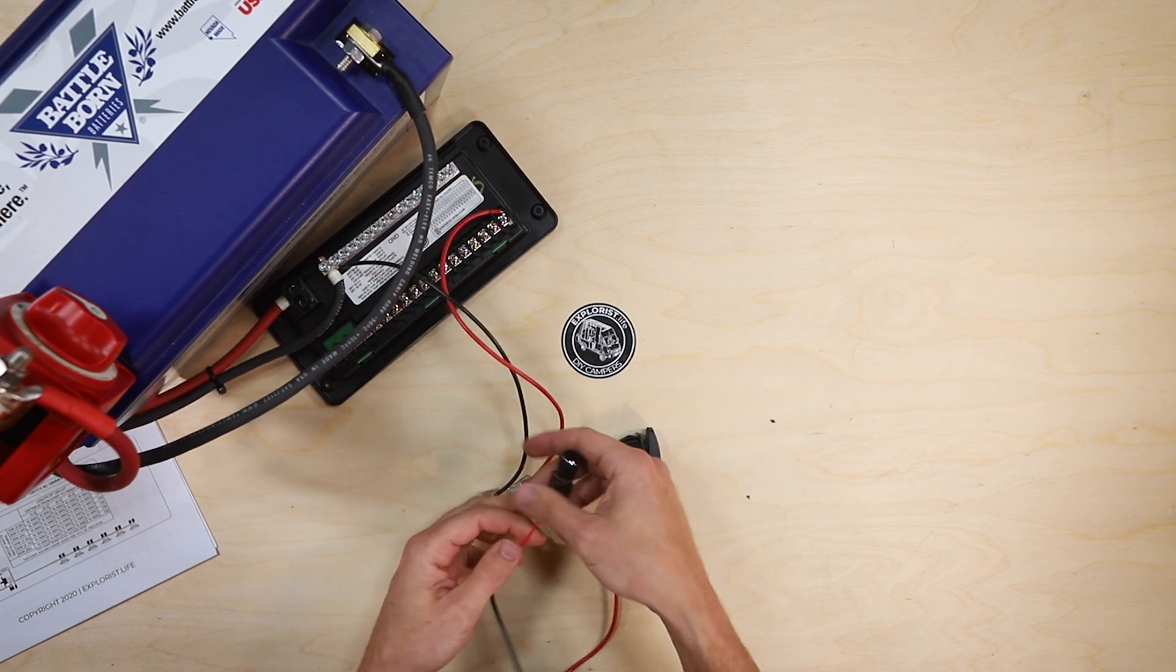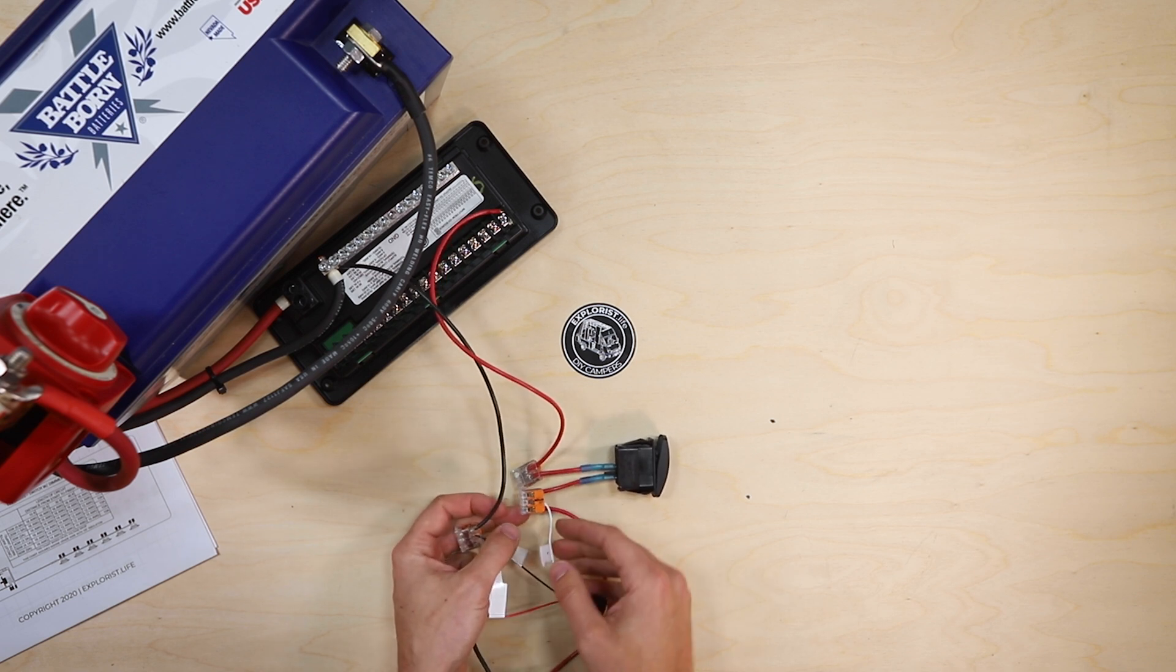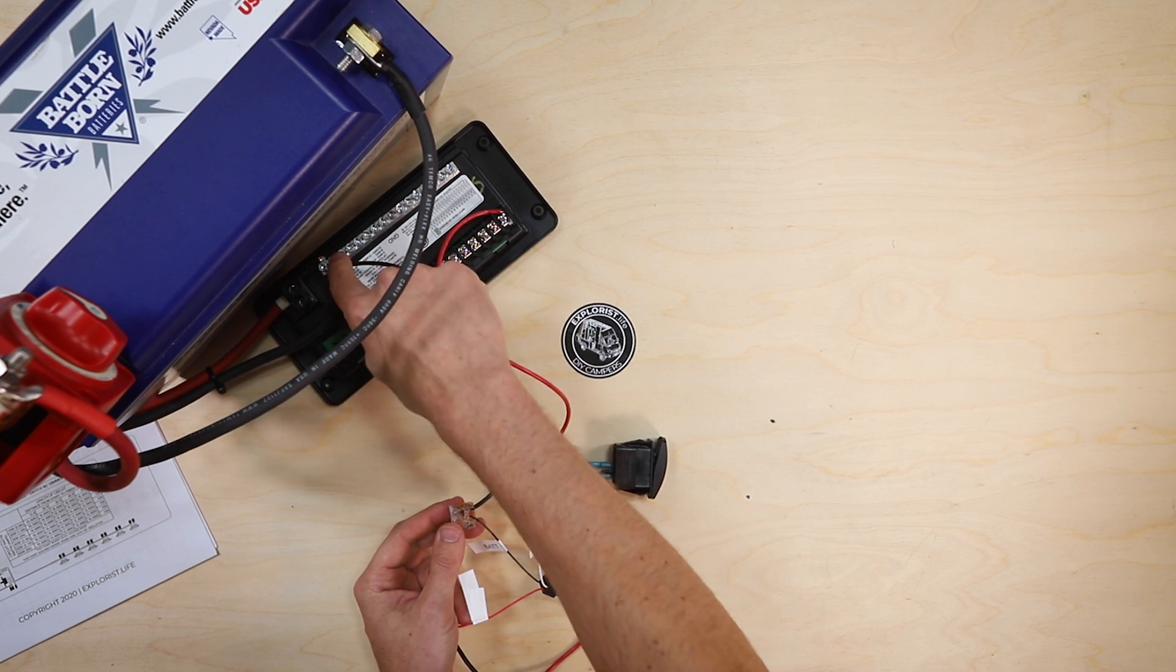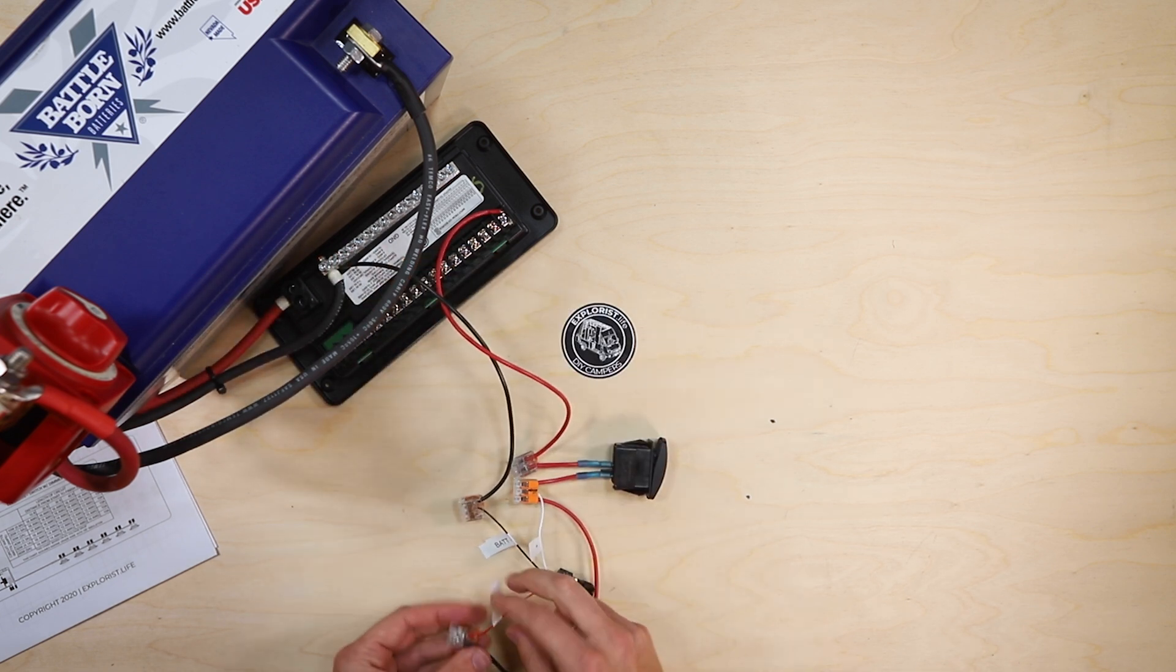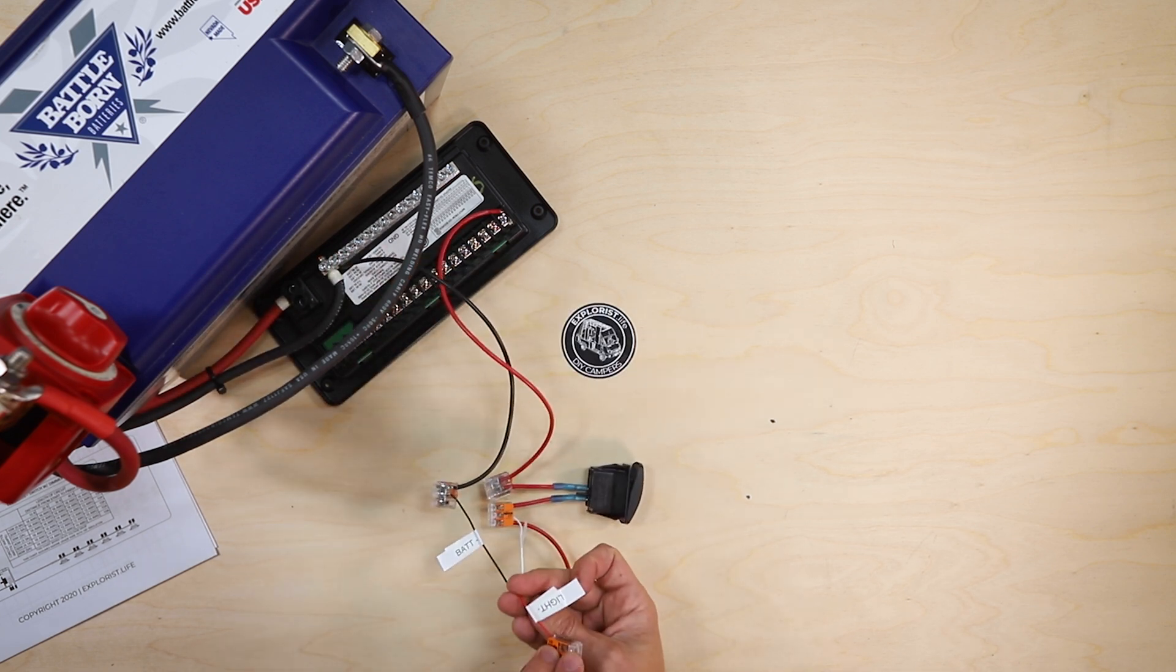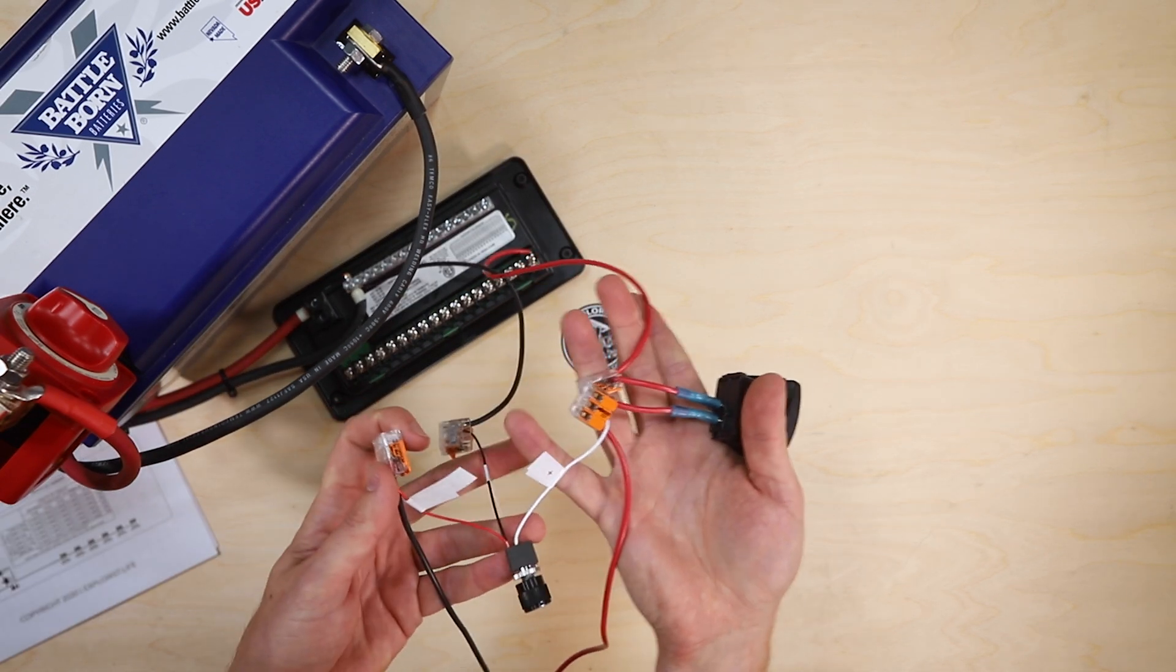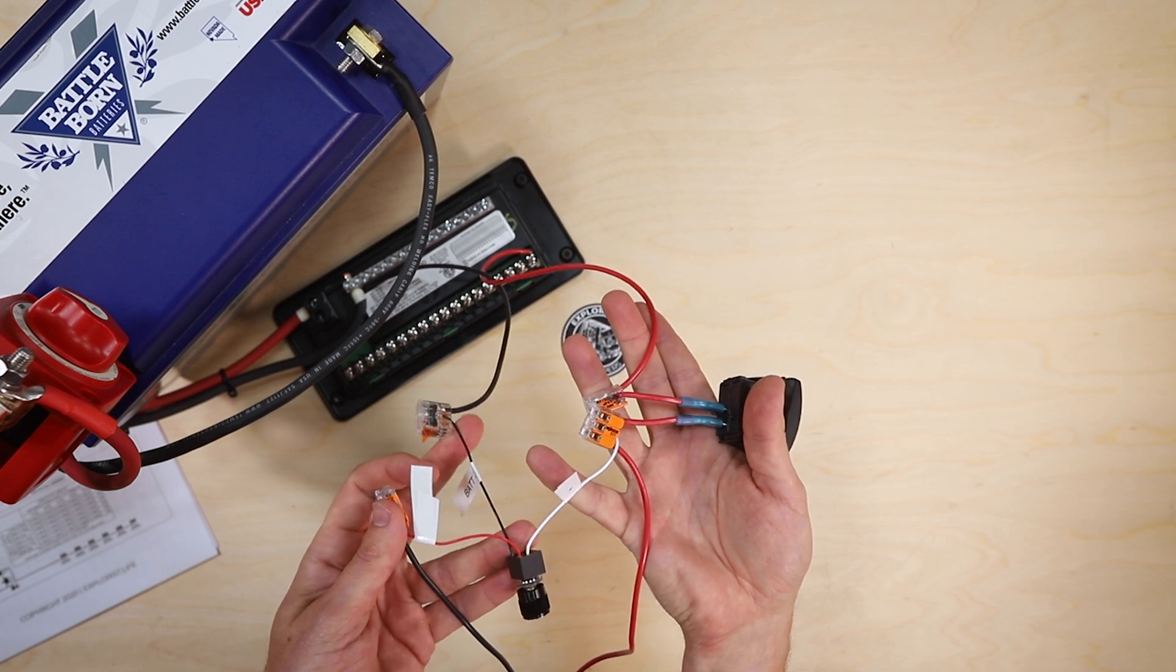So double check everything that we've got here. So we've got positive going to positive, battery negative going to the negative fuse block, which is connected to battery negative, and then light negative there. So a little closer view of that looks like that.